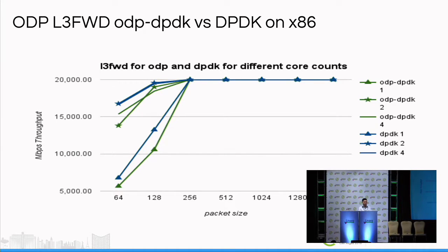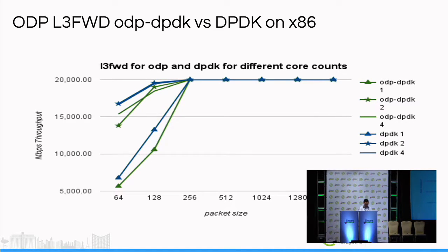This graph is about ODP-DPDK performance versus native DPDK performance. We can see there is some performance gap compared with native DPDK performance, because DPDK is highly optimized for x86 machines — it uses MMX instructions and vector instructions. ODP covers more architectures, so there is some performance gap.